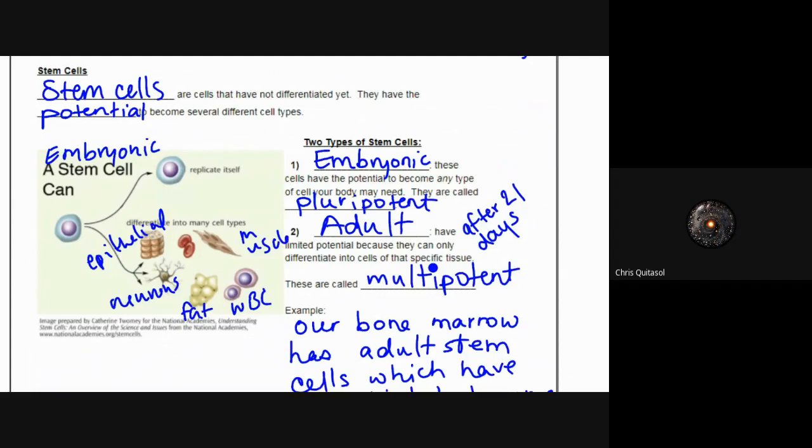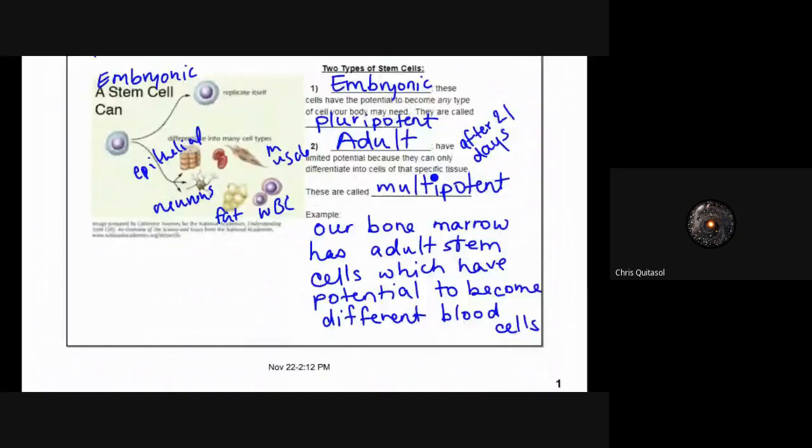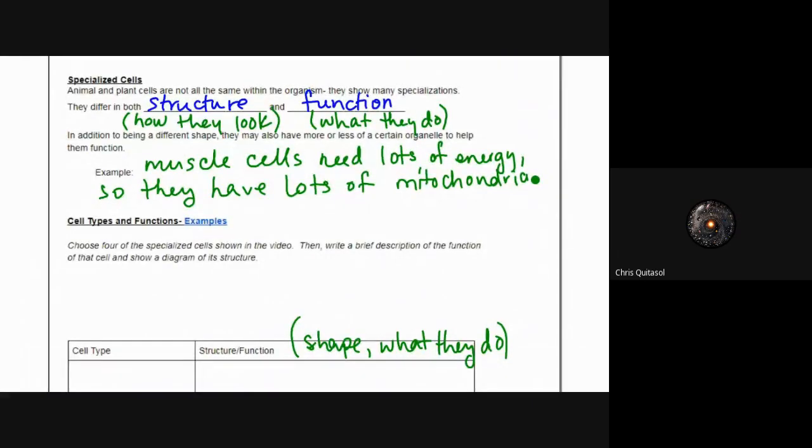Specialized cells are in both animals and plants, but within animals and plants they're different.